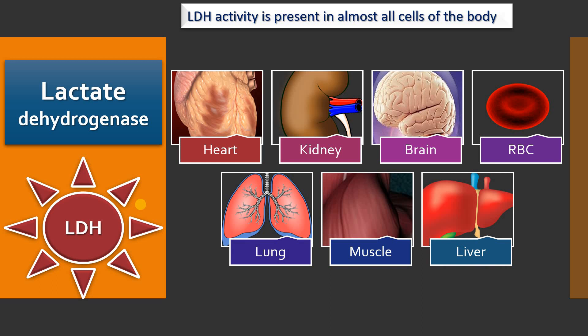Apart from this, it is also expressed in the pancreas, spleen, and other tissues. So this enzyme is widely distributed but present in varying concentrations. Please note that since this enzyme is present in RBCs, any hemolysis will affect its estimation.